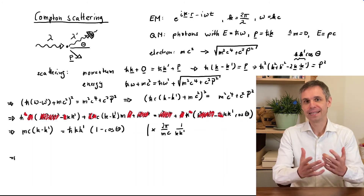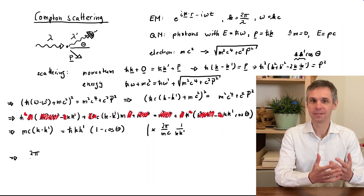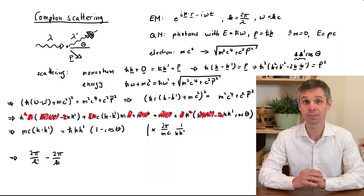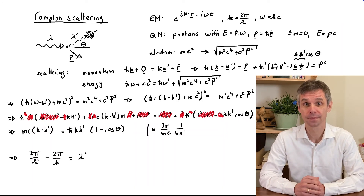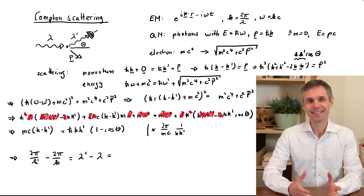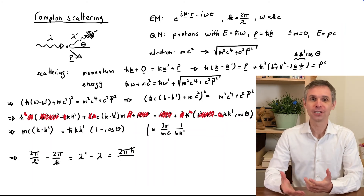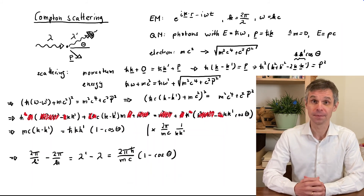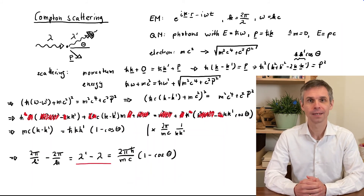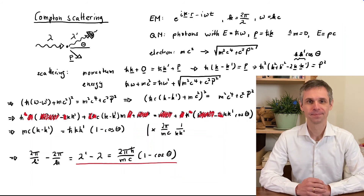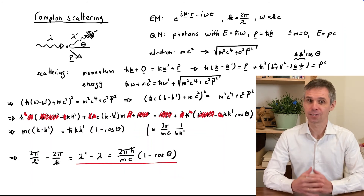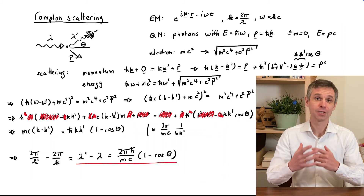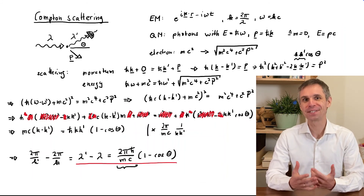Upon this, the left-hand side takes the form of the difference of the two wavelengths after and before the scattering process. On the other side, we encounter a combination of fundamental constants and an expression involving the deflection angle. This is our final expression: it determines how the wavelength changes as a function of the deflection angle. The combination of fundamental constants is known as the Compton wavelength.